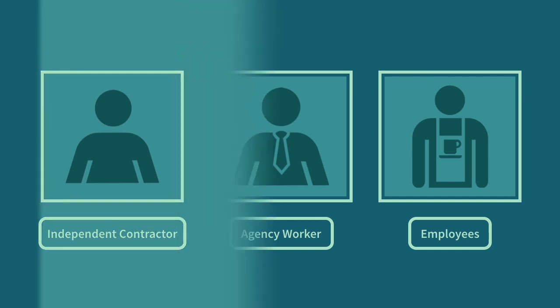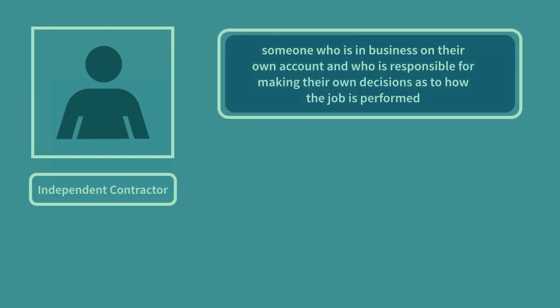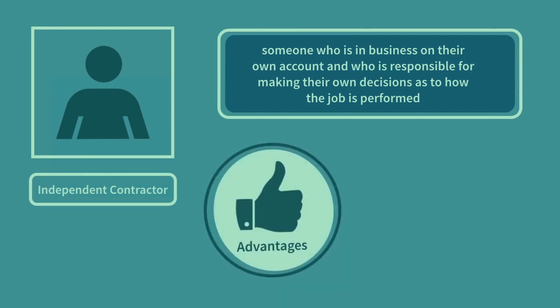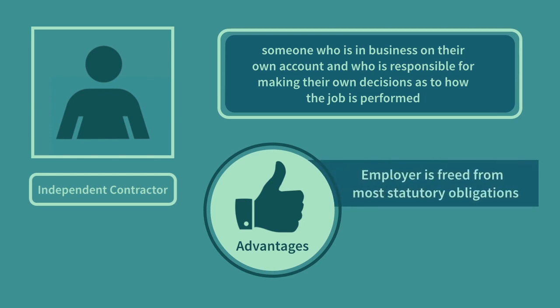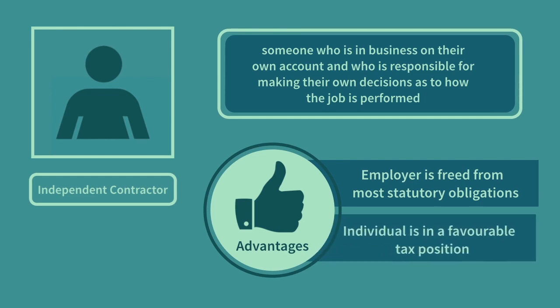What is an independent contractor? An independent contractor is someone who is in business on their own account and who is responsible for making their own decisions as to how the job is performed. There are advantages for both the employer and the individual in having a relationship of this nature. The employer is freed from most statutory employment protection legislation, and the individual enjoys a favourable tax position.